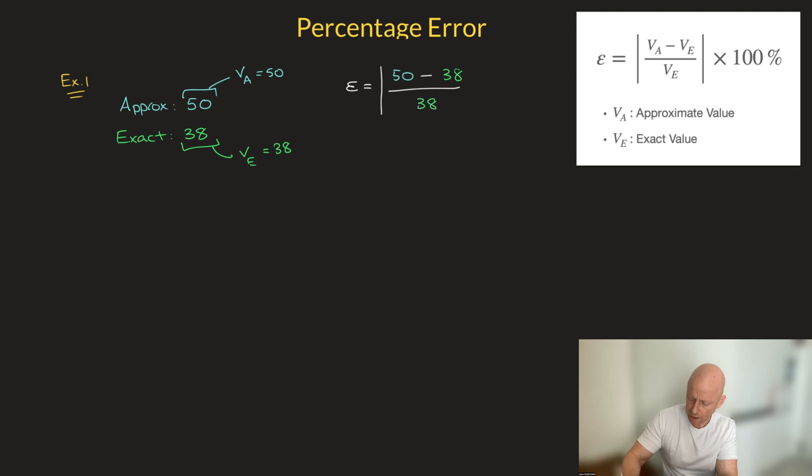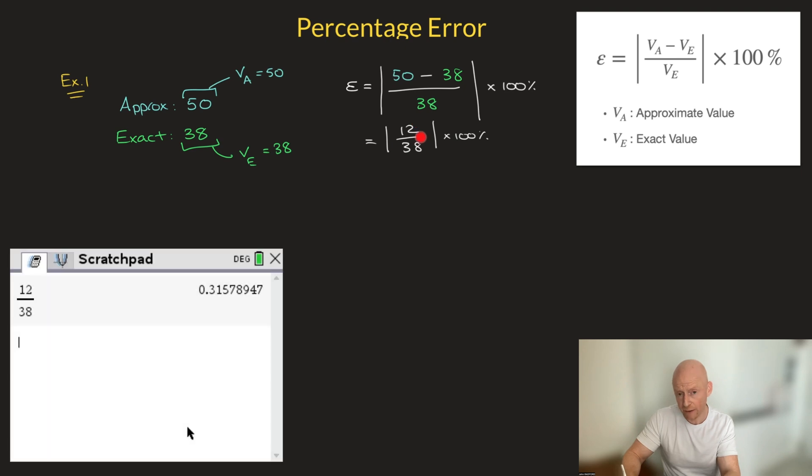And I close this absolute value and I multiply that by 100%. Now 50 minus 38 is 12, so this turns into the absolute value of 12 over 38. And again, I multiply that by 100%. And now you can go ahead and check that, but using my calculator and rounding to three significant figures, I find that 12 divided by 38 is 0.316. So this becomes the absolute value of 0.316.